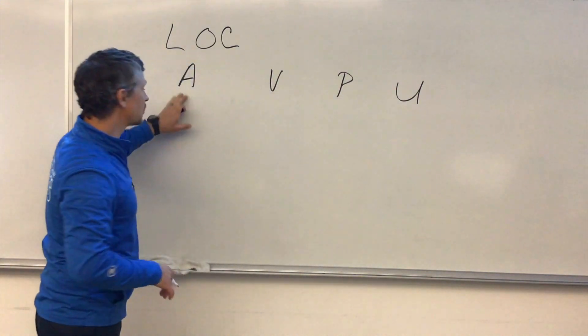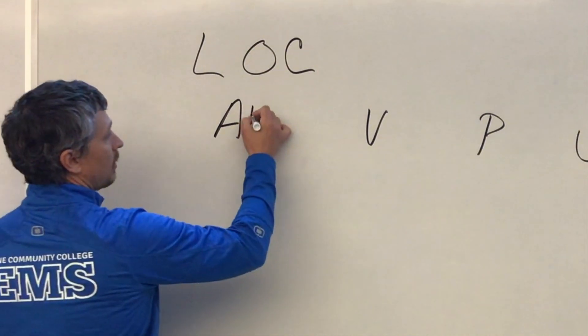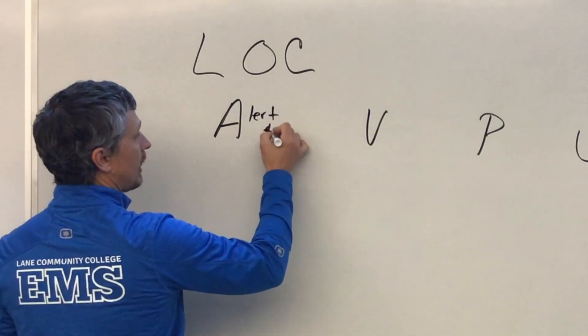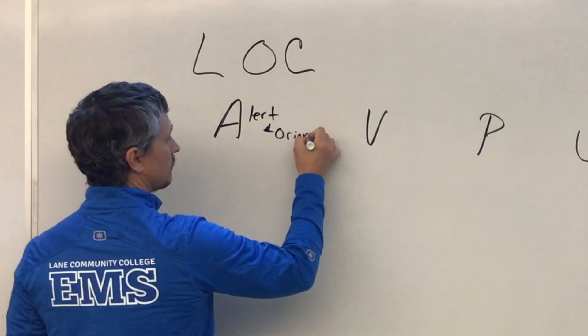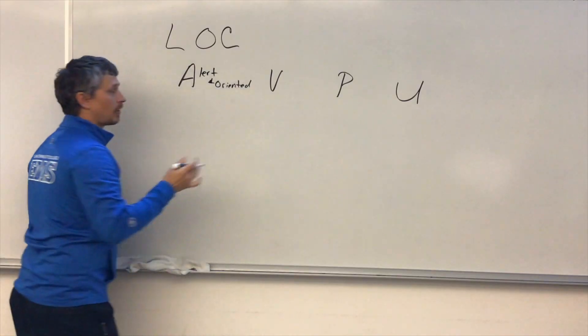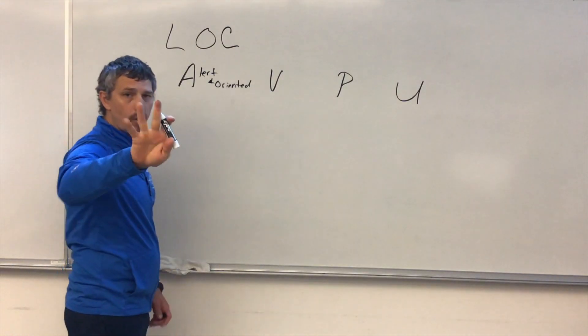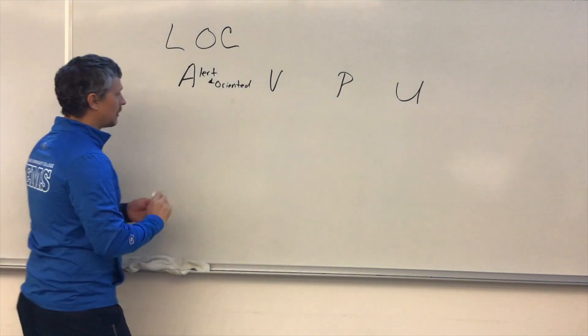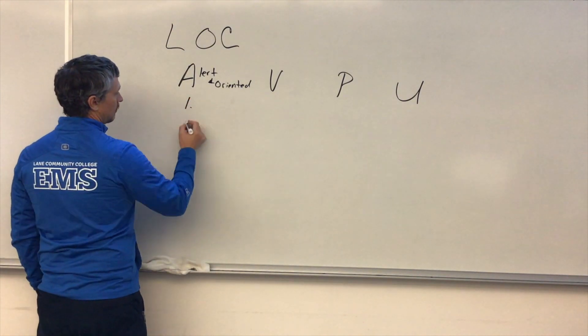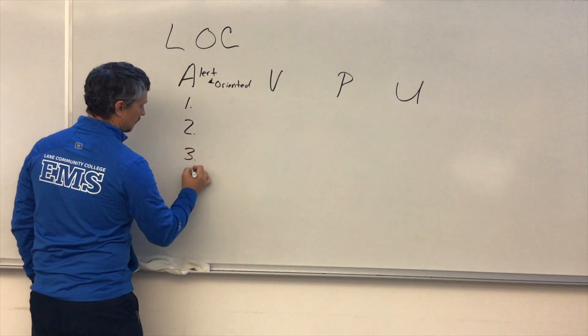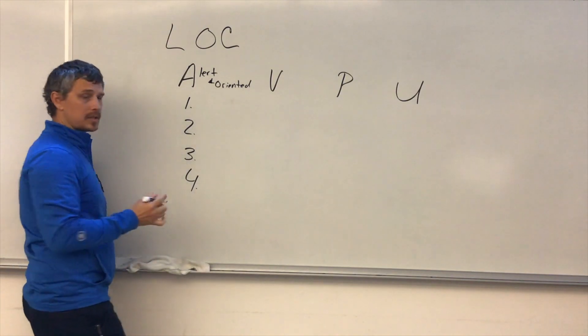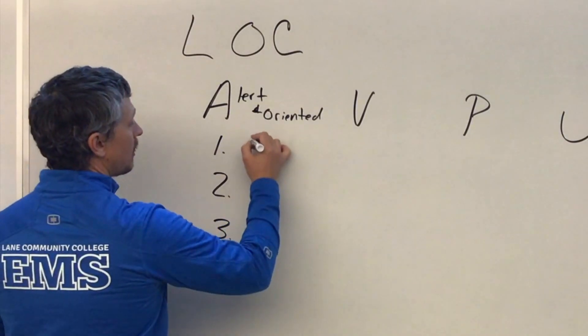We're going to start with our A, Alert and Oriented. For Alert and Oriented, we're going to have four questions. Those four questions are going to be: name or person...